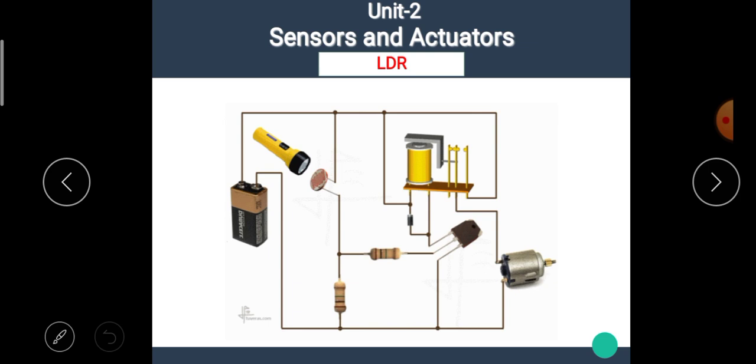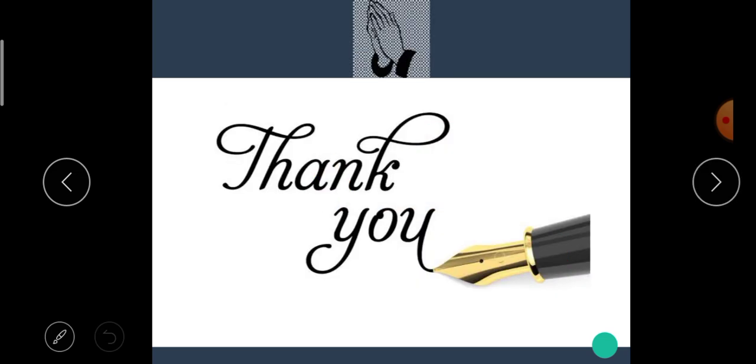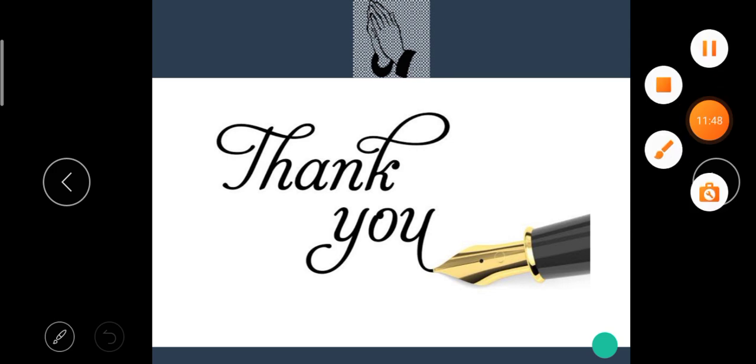I hope you all understand the applications of LDR. One application is shown here, in which we can see here this is a power supply, this is a motor, and this is a relay. This is the LDR. When we want to operate this relay to turn on the motor by using LDR. When the light falls on the LDR, the relay connects the motor and the motor starts rotating. This is a very simple application of LDR. Likewise, we can design other applications here. I hope you all understand the concept of LDR. Thank you.